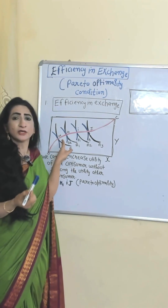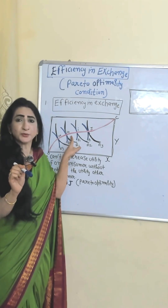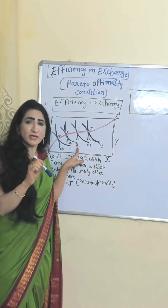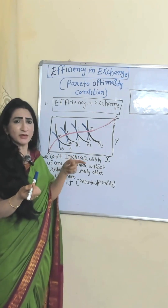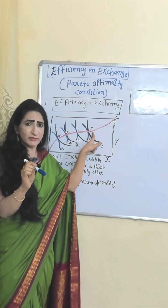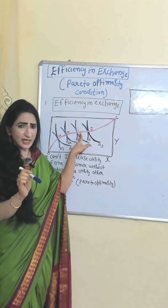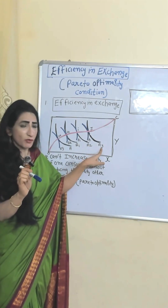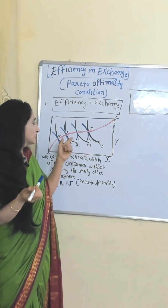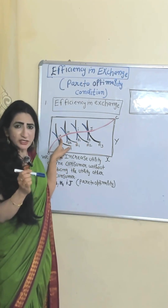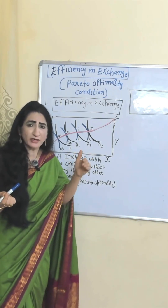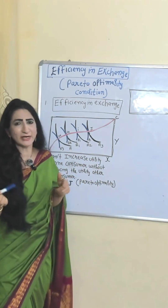Suppose the initial equilibrium point is Z. Due to any change, the economy moves from G to H. At H, utility of A increases because A moves from a lower to a higher indifference curve, but utility of B falls because B moves from a higher to a lower indifference curve. Similarly, moving from H to I to J, utility of A increases but utility of B falls. Now suppose the initial equilibrium is J; if the economy moves from J to I, utility of A falls but utility of B increases. Moving from I to H to G, utility of B increases but utility of A falls. So it is impossible to increase utility of one consumer without reducing utility of the other. All points satisfy Pareto optimality.